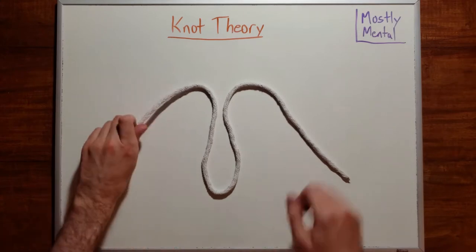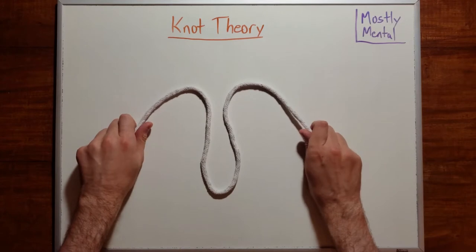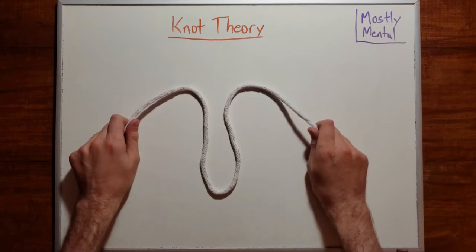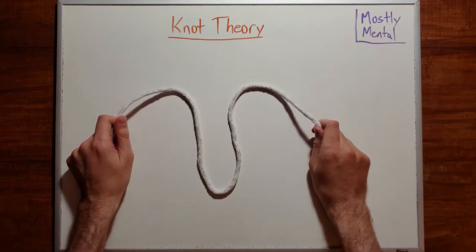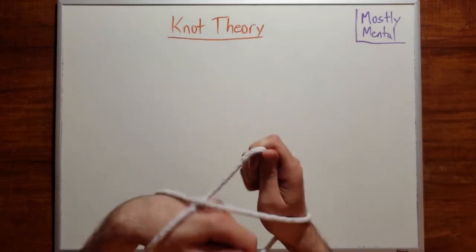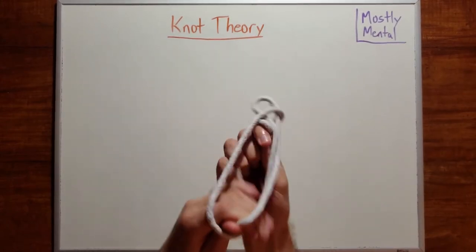Then pick up one end of the rope in each hand. Now, without letting go of either end, tie a knot into your rope. Pause the video here and give it a go.